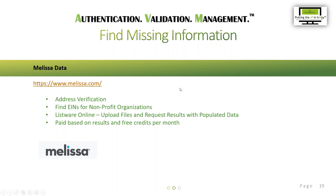Another tool I use is melissa.com. I was familiar with this from the past — when I was an AP senior manager I implemented a vendor self-registration portal that used Melissa to validate addresses. It can also find EINs for nonprofit organizations. It has an online tool where you can upload files and request results with populated data. It's paid, but they charge you only based on the hits they find, and they do give you free credits per month.